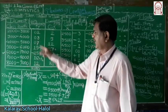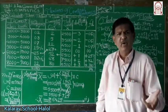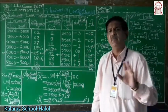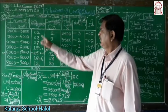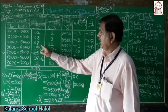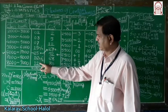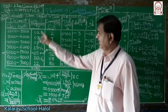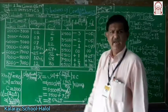Frequency means number of employees or workers. The frequencies given are: 2, 3, 7, 15, 25, 16, and 12. The frequency total is 80. N means frequency total.